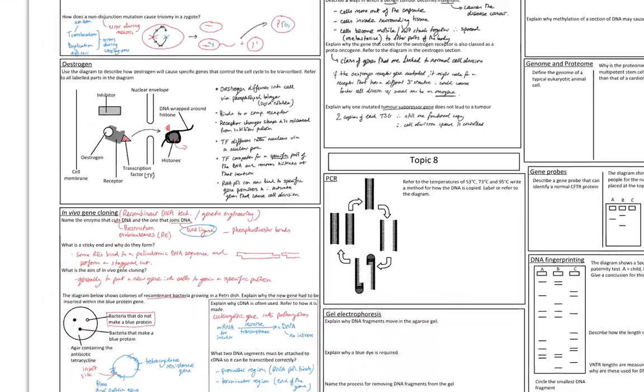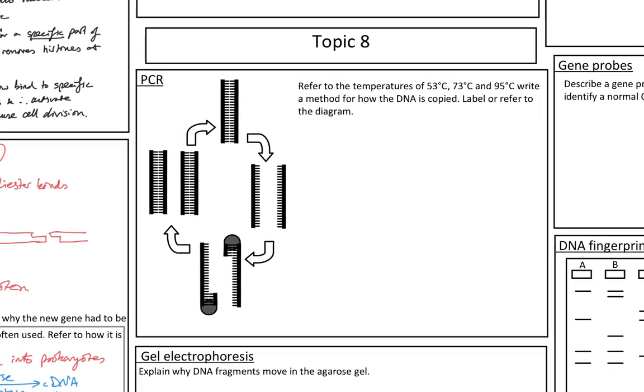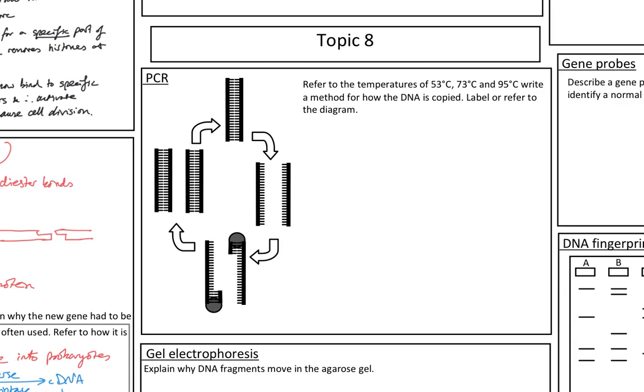Next, so that was in vivo gene cloning. This is in vitro gene cloning. So PCR is the same as in vitro gene cloning. I've underlined it because it should be in italics. It says refer to temperatures 53 degrees C, 73, 95. Write out a method for how the DNA is copied, refer or label the diagram. So let's start here. So there's some double-stranded DNA. It's now single-stranded. So we do that with 95 degrees C. Then we have to cool it to 53 degrees C, so that that step can happen. And then we need to raise it up to 73 degrees C.